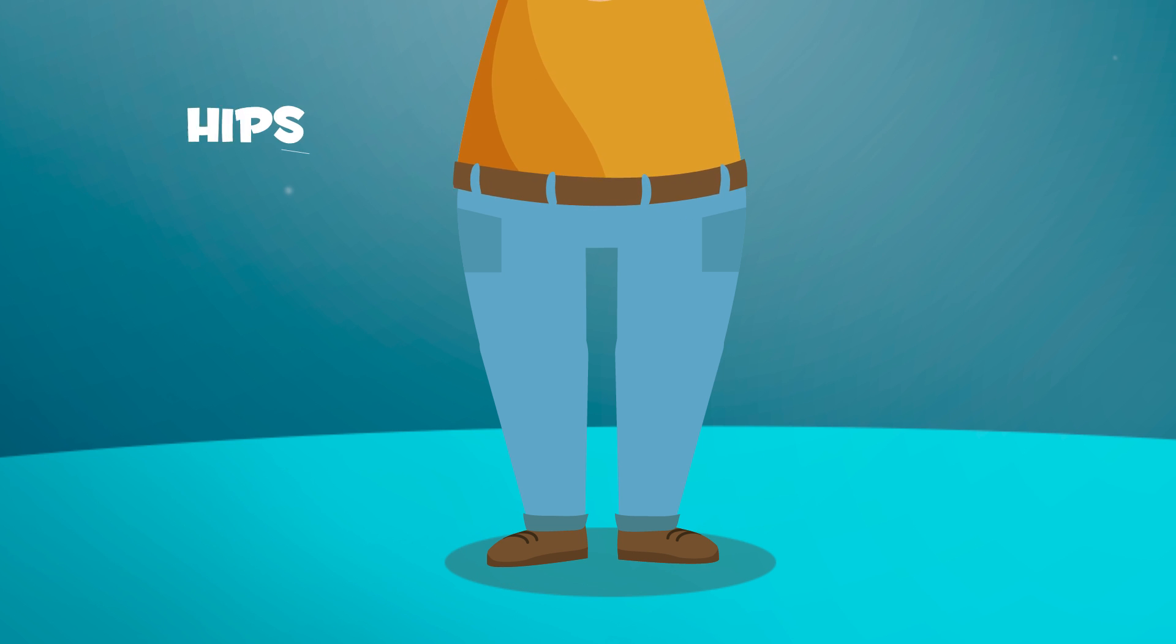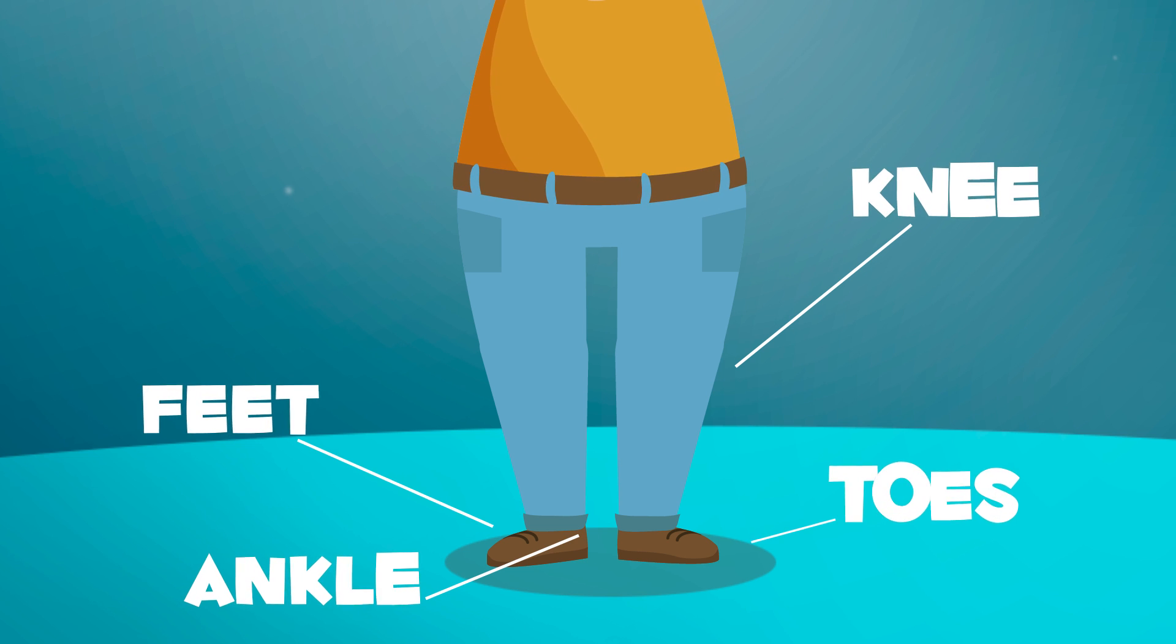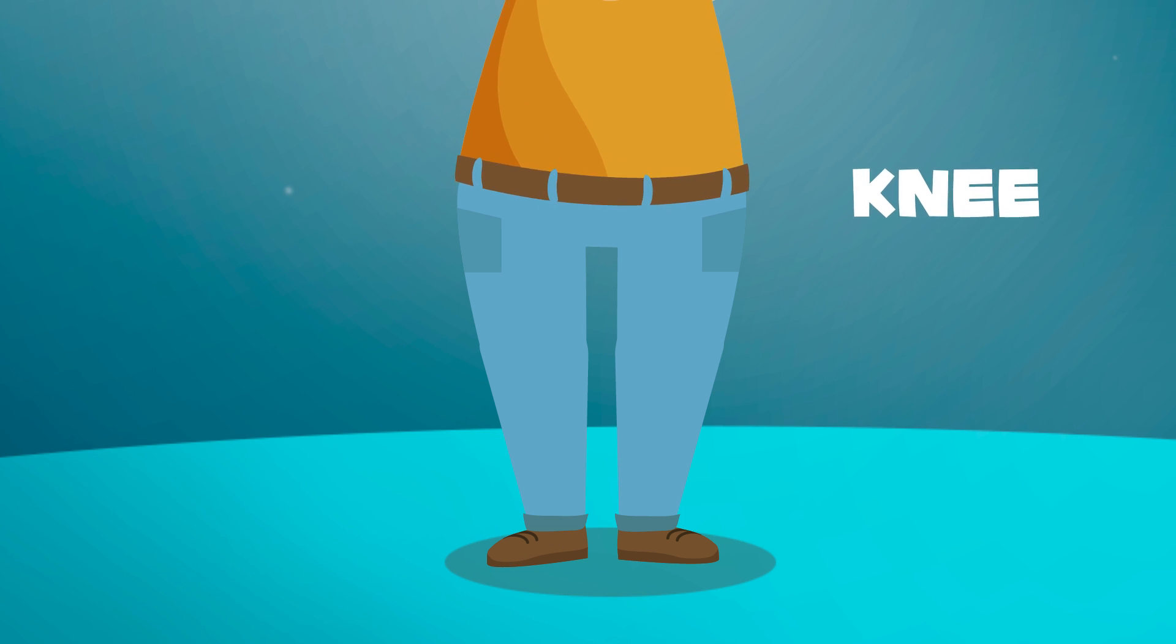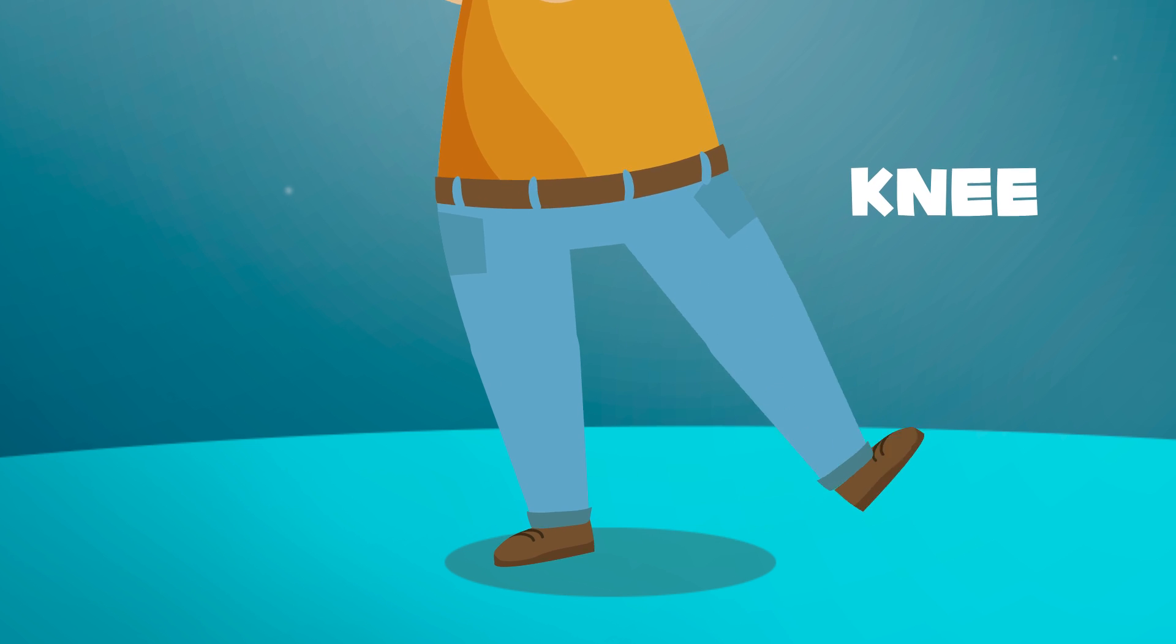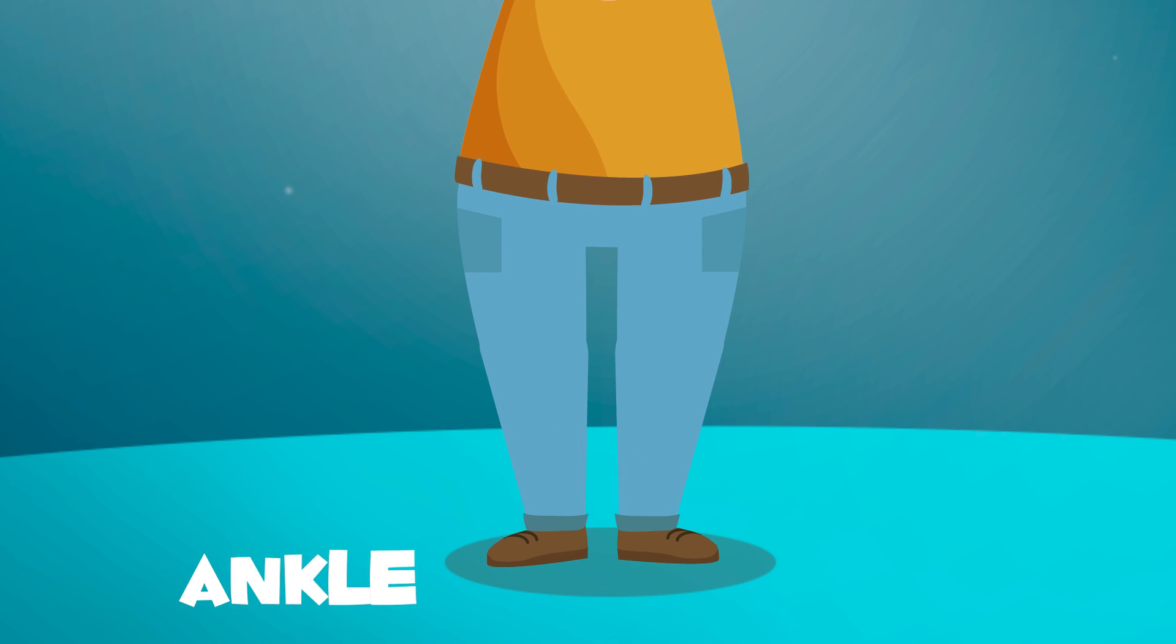On your leg you can find your knee, ankle, feet and toes. Your knee is a joint. With them you can bend your legs. Your ankle is a joint that connects your leg to your foot.